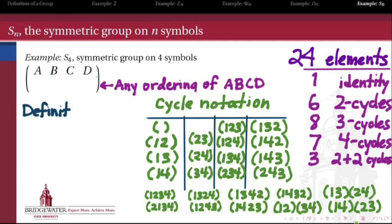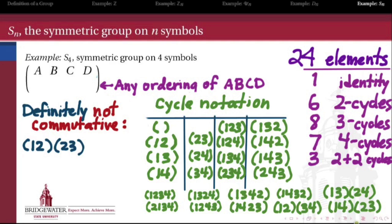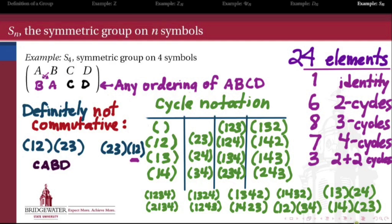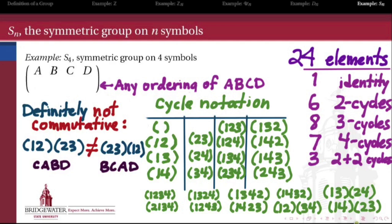Is the symmetric group commutative? Of course not. Let's see why. Take the two-cycle (1 2) that transposes the first two elements, and the two-cycle (2 3) that transposes the second and third. Reading right to left: first applying (2 3) turns A, B, C, D into A, C, B, D; then applying (1 2) swaps the first two, giving C, A, B, D. Now reverse the order: first apply (1 2) to get B, A, C, D; then apply (2 3) to get B, C, A, D. The results are different, so the symmetric group is also a non-abelian group.